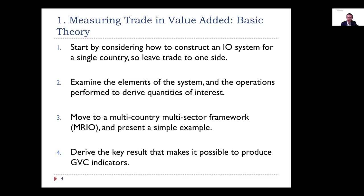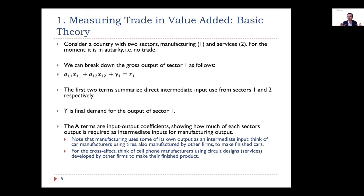We'll derive key results that make it possible to produce first-generation GVC indicators. Let's start with a single-country input-output framework with two sectors: manufacturing and services, considering an economy in autarky with no trade. First, we want to decompose the gross output of sector one — x1. We can break it down into two components: the part absorbed by final demand y, purchased by consumers, plus intermediate demand captured by input-output relationships between sectors.